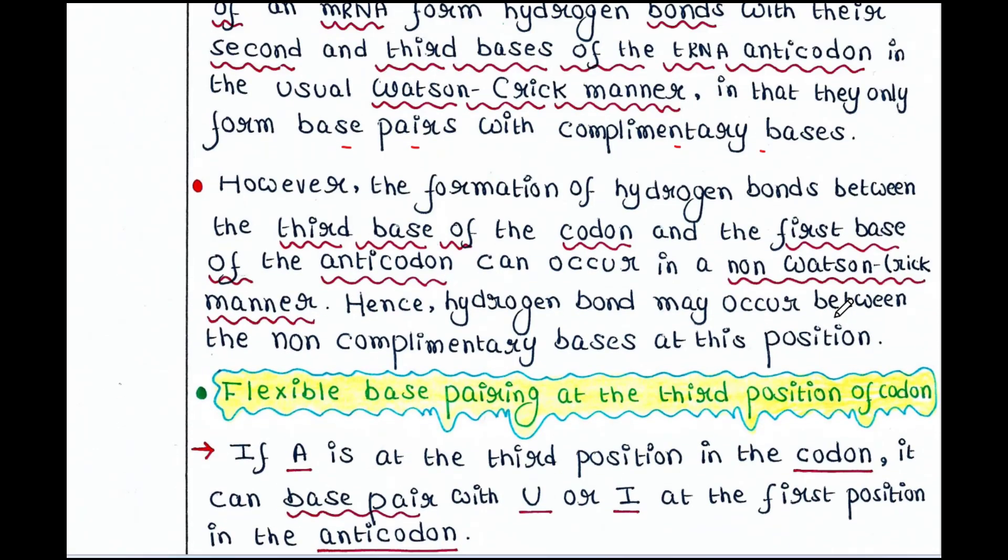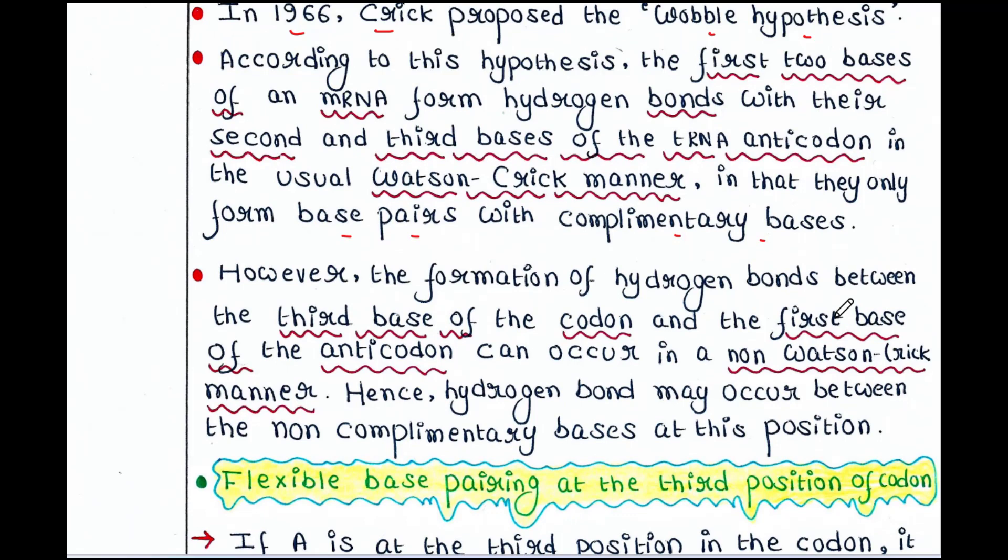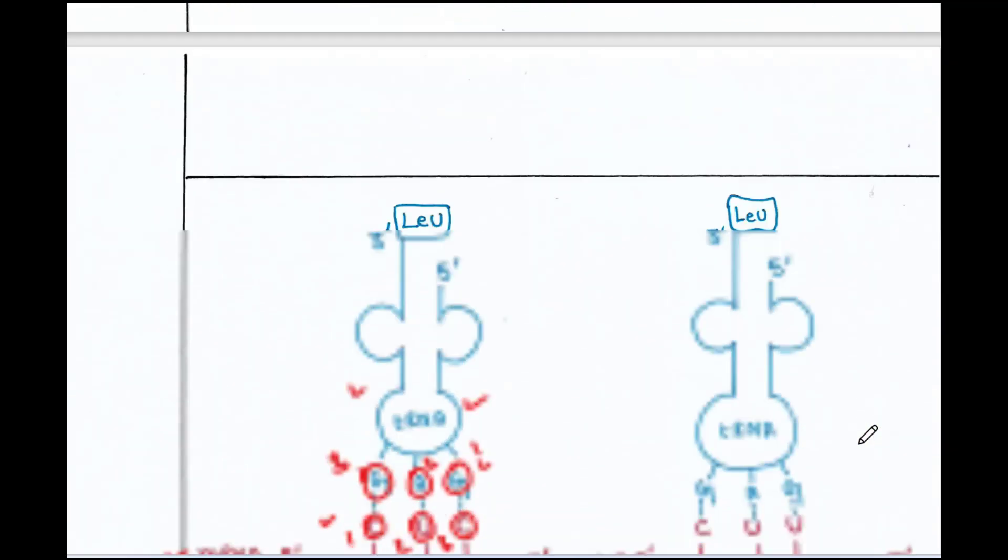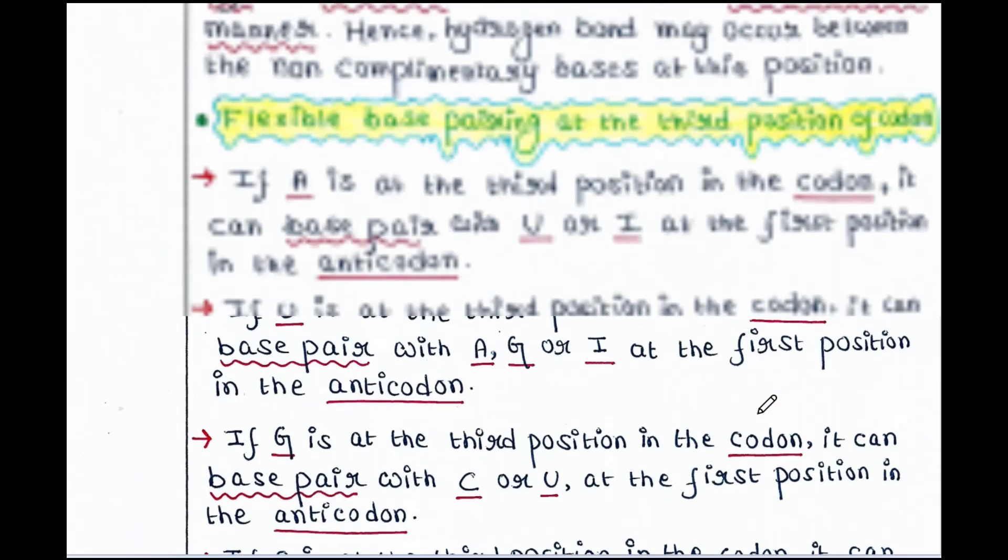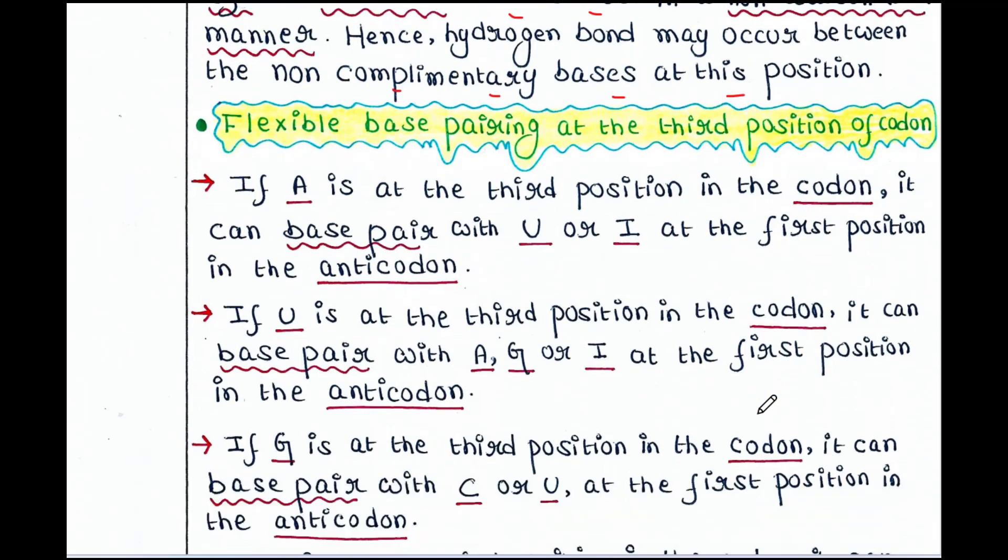That is the unusual base pairing. This is called wobble pairing. So, however, the formation of hydrogen bonds between the third base of the codon and the first base of the anticodon can occur in a non-Watson-Crick manner. Hence, hydrogen bond may occur between the non-complementary bases at this position. So, we have seen that these U and G, these are non-complementary base pairing.